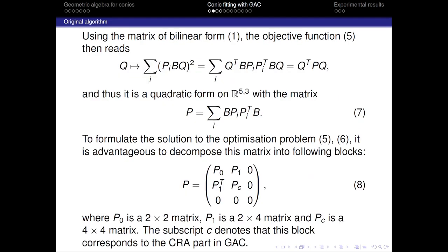Since we want to minimize this objective function and we are not interested in the minimum that occurs when q is equal to zero vector, the authors consider the geometric constraint that is natural for the GAC setting. Consequently, using the matrix of bilinear form we can rewrite the objective function as a quadratic form with matrix P that is acquired in this way.